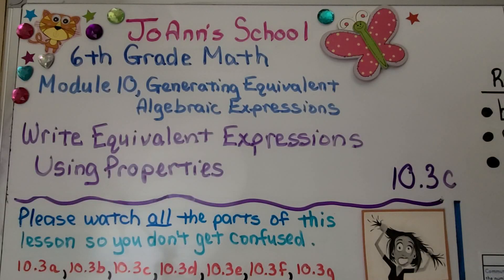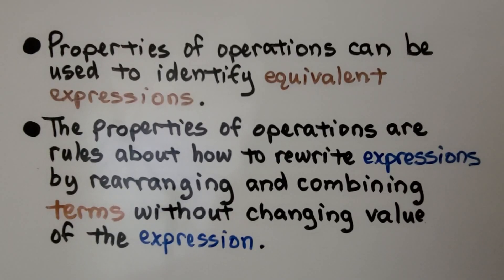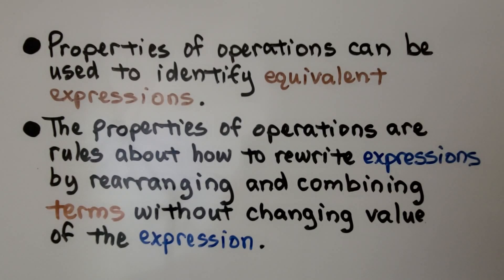Lesson 10.3c: Write Equivalent Expressions Using Properties. Properties of operations can be used to identify equivalent expressions. The properties of operations are rules about how to rewrite expressions by rearranging and combining terms without changing the value of the expression.